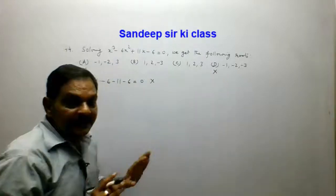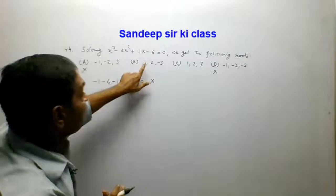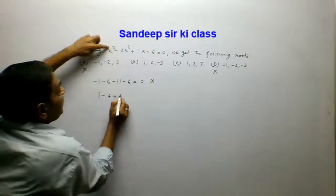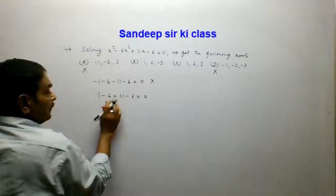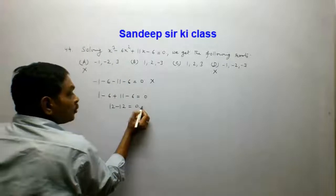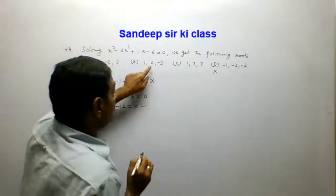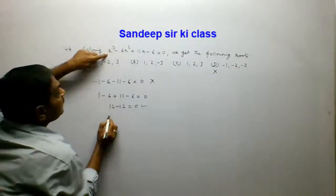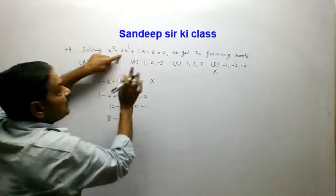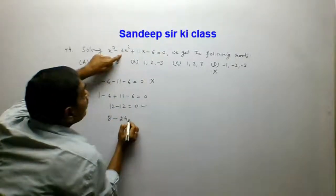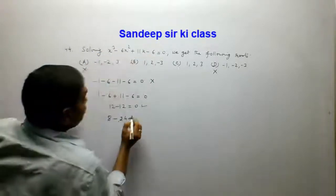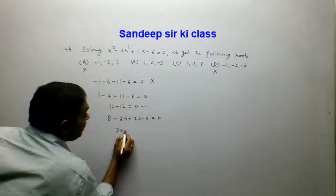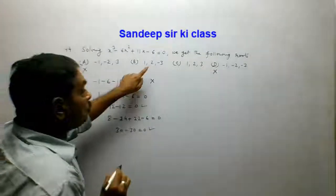Since -1 is not a root, option D is also eliminated. Now testing x = 1: 1 - 6 + 11 - 6 = 12 - 12 = 0, so x = 1 satisfies the equation. Testing x = 2: 8 - 6(4) + 11(2) - 6 = 8 - 24 + 22 - 6 = 30 - 30 = 0, so x = 2 also satisfies.